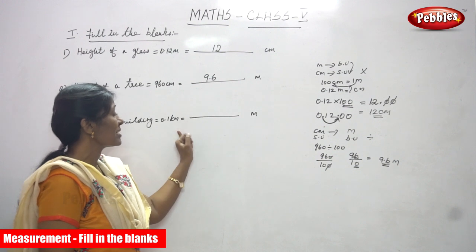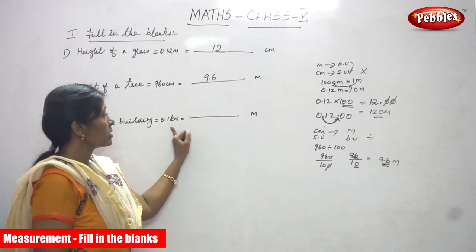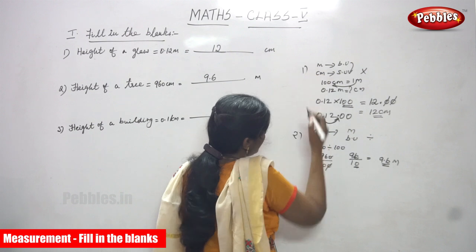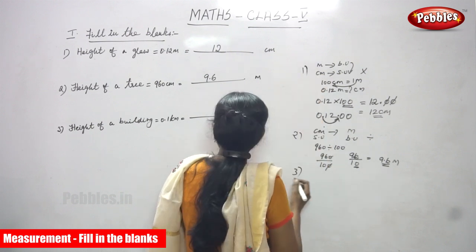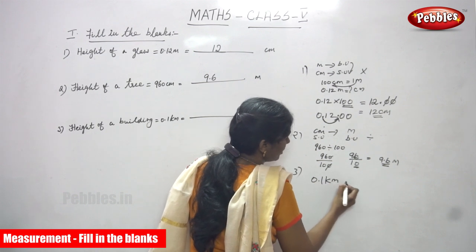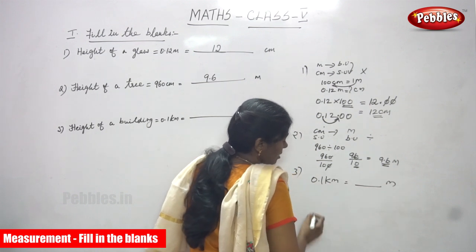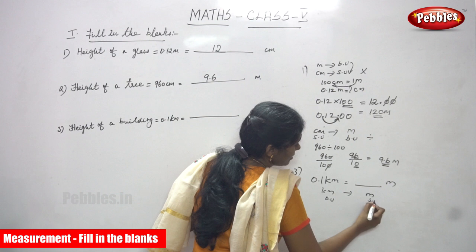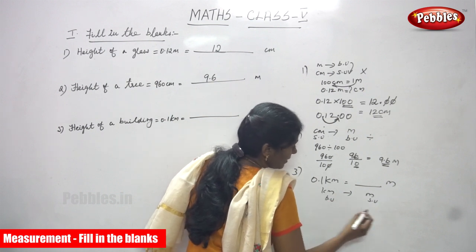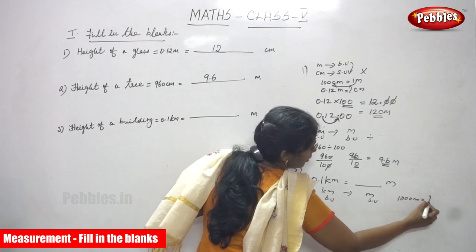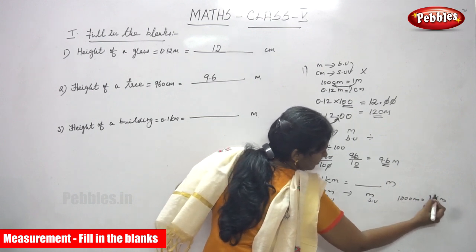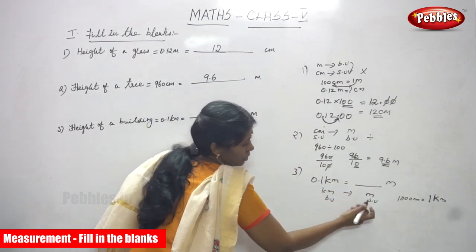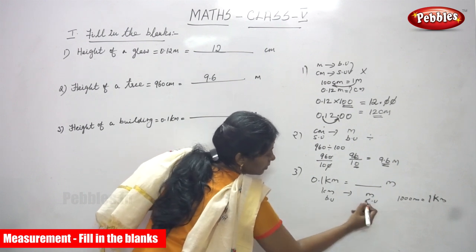Now the height of a building is 0.1 kilometer — convert into meters. Kilometer is a bigger unit and meter is a smaller unit. The formula is: 1 kilometer equals 1000 meters. So converting kilometers to meters is converting from a bigger unit to a smaller unit.